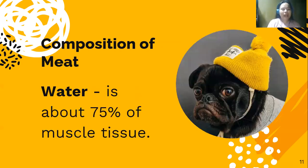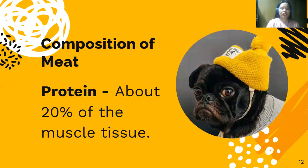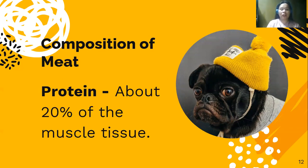Meat is composed of 75 percent water of the muscle tissue, while protein makes up about 20 percent of the muscle tissue. Protein coagulates when it is heated, which means the meat becomes firmer with a loss of moisture. Coagulation is also related to doneness.